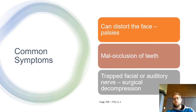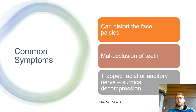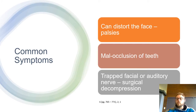Common symptoms across these diseases include facial palsies, malocclusion of the teeth, and trapped facial and auditory nerves which sometimes require surgical decompression. As bone thickens — in long bones and within the cranium — the foramina through which cranial nerves pass become more occluded, and the narrowing space compresses those cranial nerves, potentially damaging them.